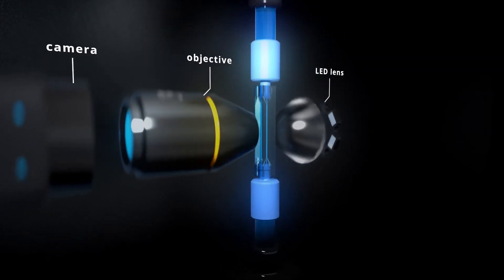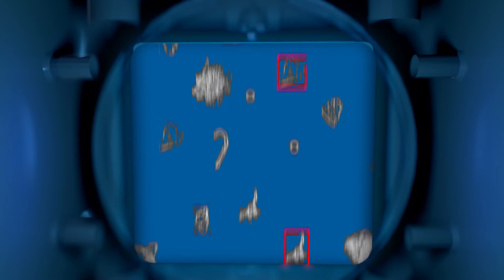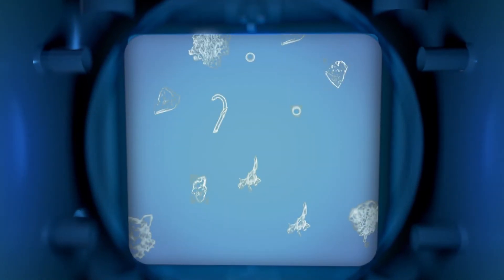Using a stroboscopic flash to eliminate motion blur, a camera captures images of the particles in the sample through an objective lens.